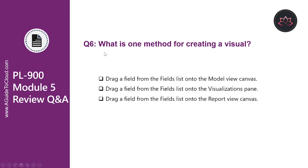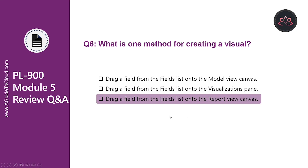Let's look at question number six. What is one method for creating a visual? Is it dragging a field from the field list onto the model view canvas? No. It is definitely not the visualization pane either. The correct answer is drag a field from the fields list onto the report view canvas. Dragging any field from the field list onto the open white space of the canvas will automatically create a default visual for that data type.